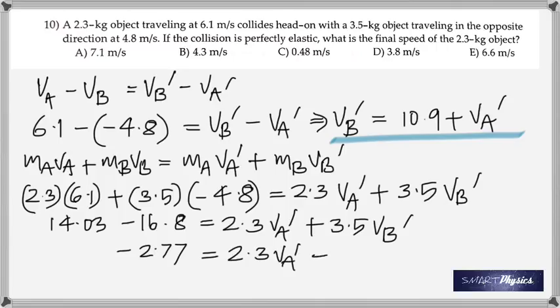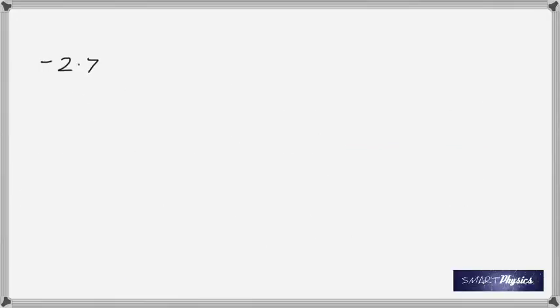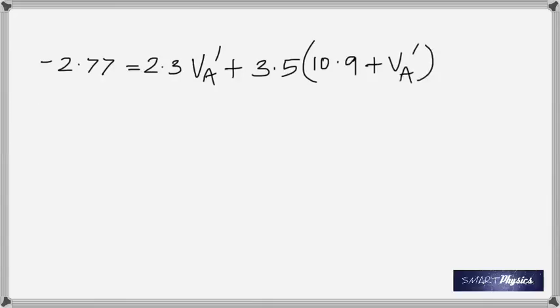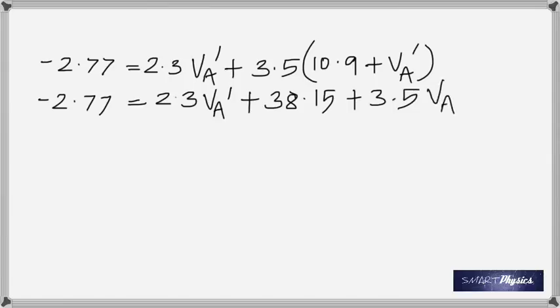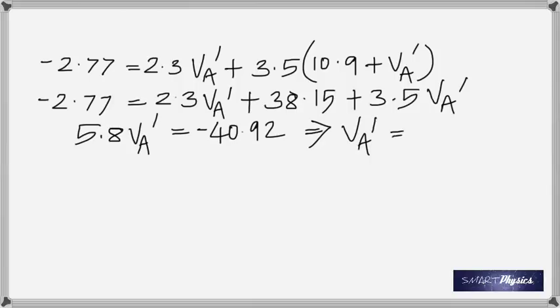Once you have the two equations, it's just a matter of solving both of them. Those are the two equations and now we've got to solve them. You get Va prime, and once you get Va prime, you could if you want to find the other one.